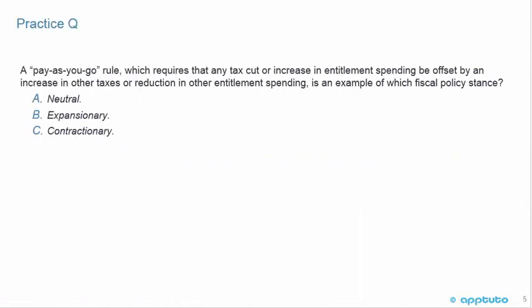Just two more quick practice questions to finish this LOS. The first one: a pay-as-you-go rule, which requires that any tax cut or increase in entitlement spending be offset by an increase in other taxes or reduction in other entitlement spending, is an example of which fiscal policy stance? A, neutral; B, expansionary; or C, contractionary?